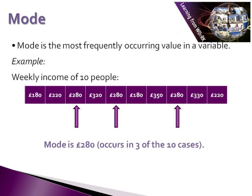The mode, looking at an example of the weekly income of 10 people, is the most frequently occurring variable in that particular data set. In this example, 280 is the value that occurs most frequently — it appears in three of the 10 cases — so the mode is 280. Every other value occurs either only once or twice.